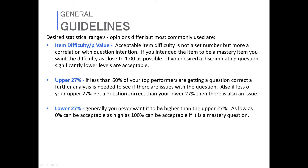For the upper 27%, there's a slightly firmer guideline. If less than 60% of your top performers are getting the question correct, you really need to look at whether there's an issue — maybe multiple correct answers, confusing wording, too much or too little extraneous information, or issues with how the content was taught. Also, if less of your upper 27% get it correct than your lower 27%, that's another big red flag. It's a guideline, not a hard number, but it's a starting point.